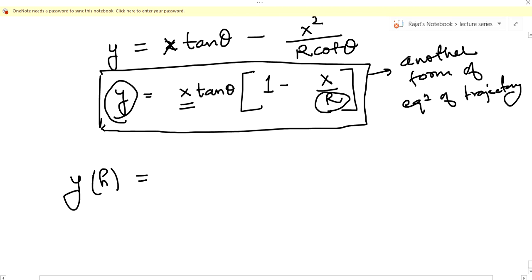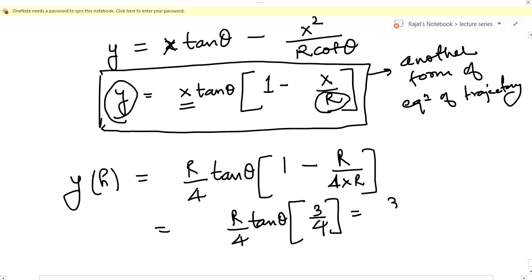It's very simple. So y, or the height, will be equal to R by 4 times tan theta. The angle is given to us theta, so tan theta times 1 minus R by 4 divided by R, so this will be R by 4 tan theta times 3 by 4, so 3 upon 16 R tan theta. This is the answer.